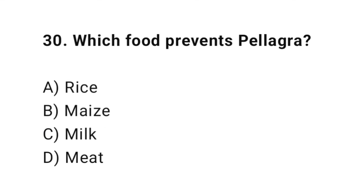Question number thirty: which food prevents pellagra? The right answer is D — meat. Meat is rich in niacin and prevents pellagra.